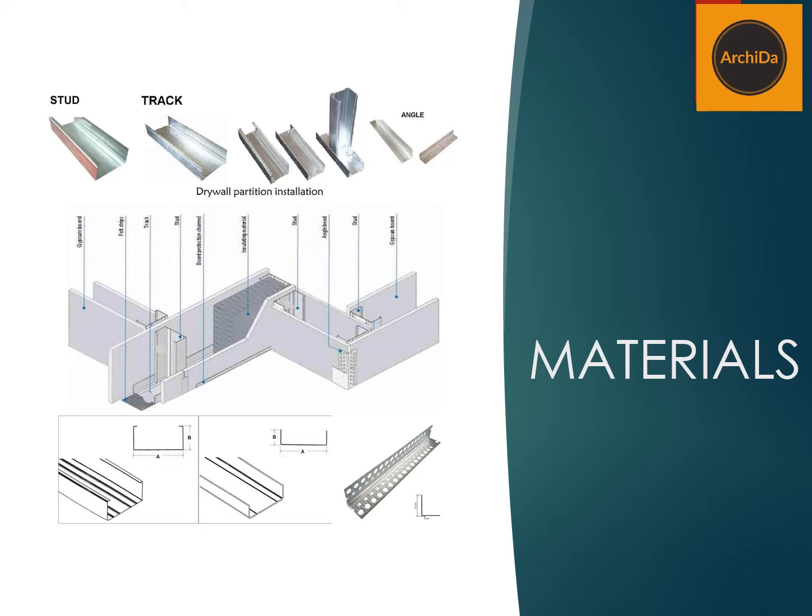This is how the metal framing is being positioned. If you notice, the track is located at the lower portion of the wall, then the stud is the vertical studding. You will also notice an angle, which is for the corners.